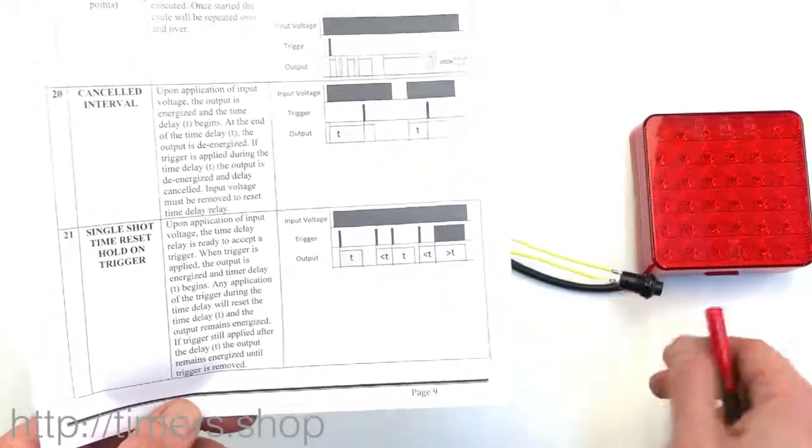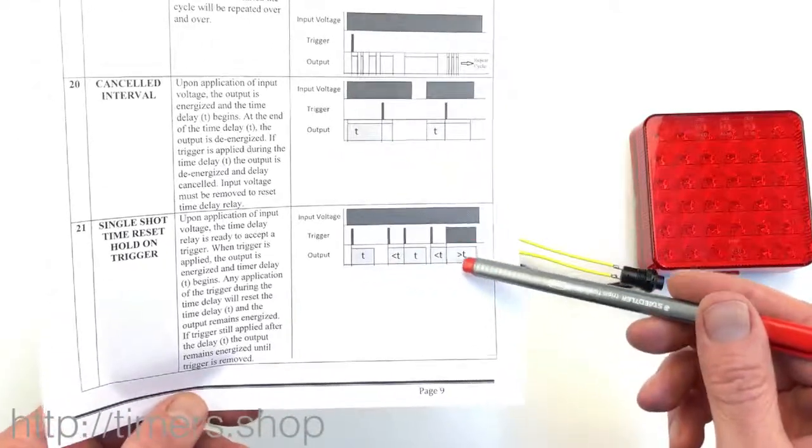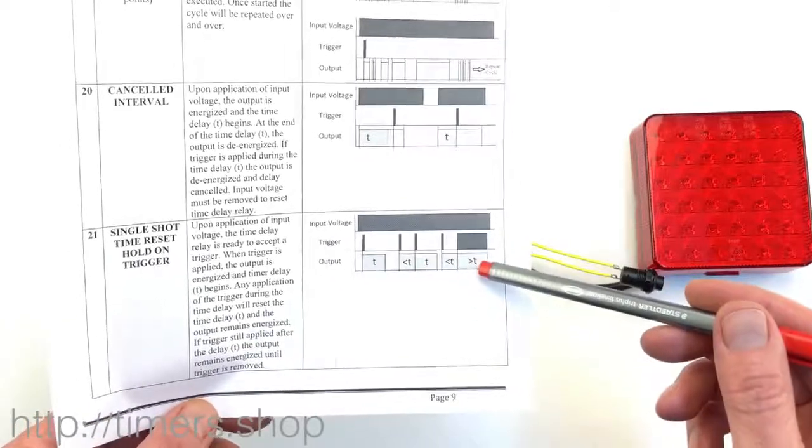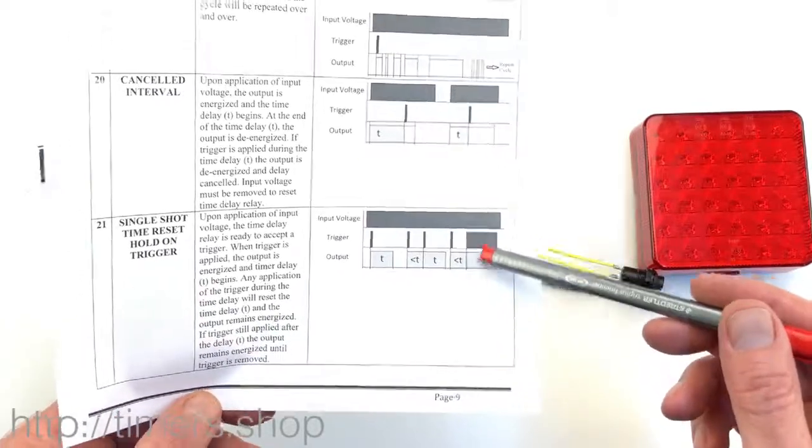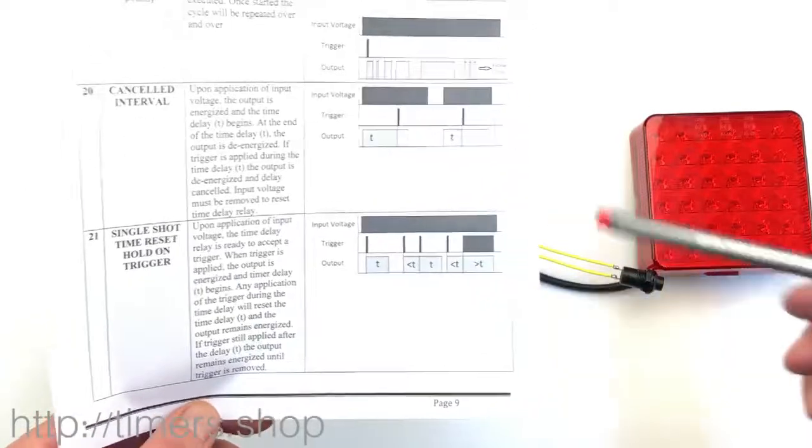So if it's longer than five seconds or whatever your time T, if you hold the trigger for longer time. Now, if it's a shorter time, that means you're just resetting the trigger.